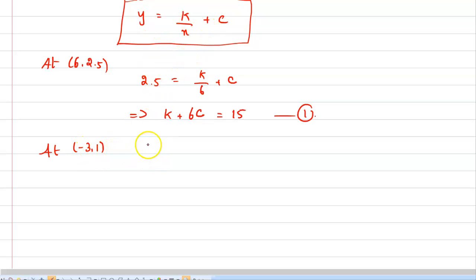Another point given is (-3, 1). So the equation becomes 1 equals k by minus 3 plus c. By simplifying, we get k minus 3c equals minus 3. Mark this as equation 2.